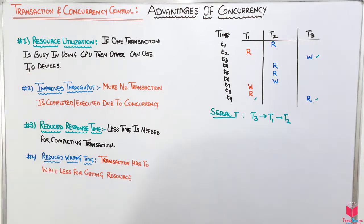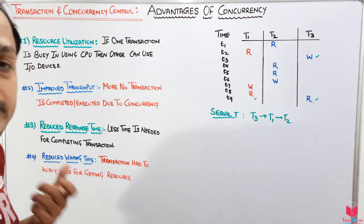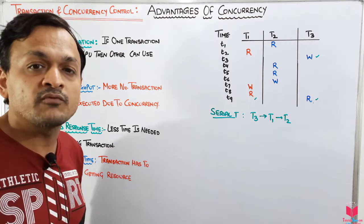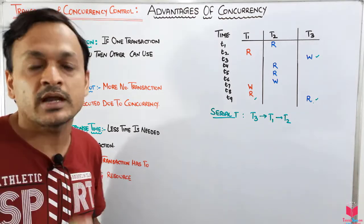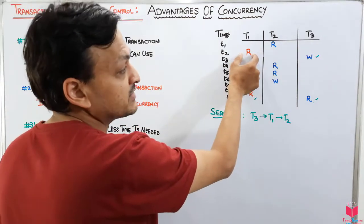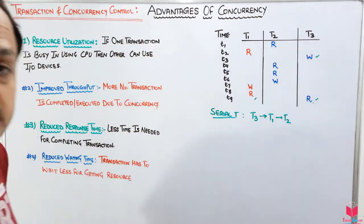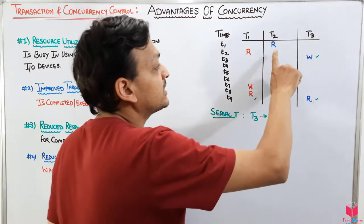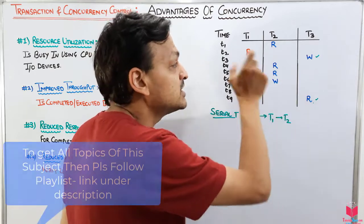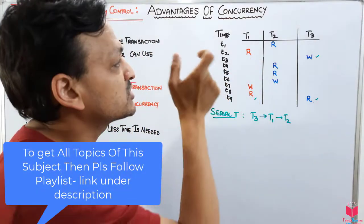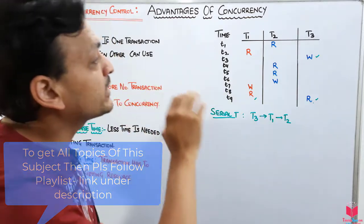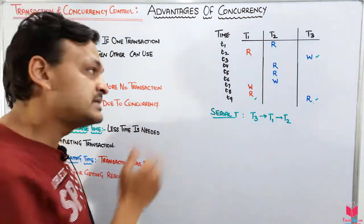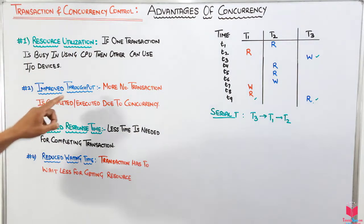The second advantage is improved throughput. Throughput means more transactions completed in a given time slot. Because small portions of multiple transactions execute side by side — CPU switching from one to another — more instructions get executed overall. Some transactions even complete earlier. There is no need for any transaction to wait unnecessarily, which helps improve the overall throughput.